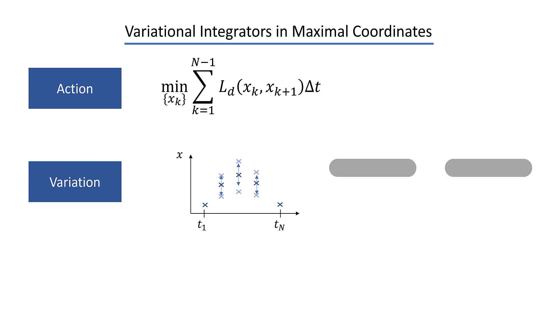If you have a constraint, for example, that these two links should be connected together, you can just form a simple implicit equation that describes the setting, and you can add these constraints to the discrete action sum with so-called Lagrange multipliers. This is just the same as adding constraints to a regular optimization problem.